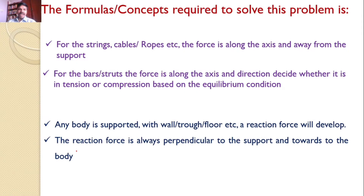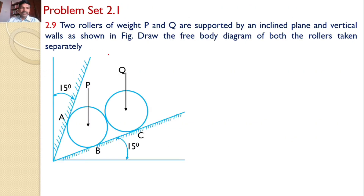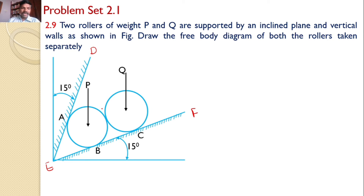With this concept, let us go to the solution of our problem. In this problem, there are two rollers, P and Q. Clearly, we can see in the diagram that P and Q are supported by some fixed support. Let us give some names here: D, E, F. So the rollers P and Q are supported by inclined fixed walls D, E, F. Our interest is to draw the free body diagram of roller P and Q separately. Let us discuss roller by roller.